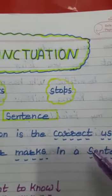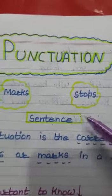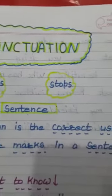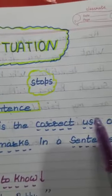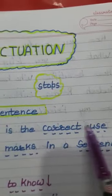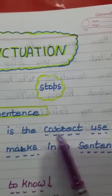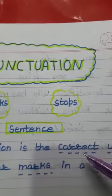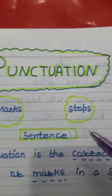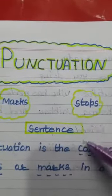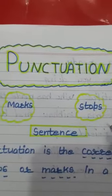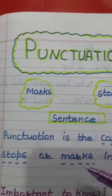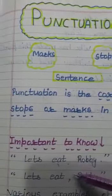We see that in a sentence, when we make use of marks and stops, the use should be correct. There should be correct use of the marks or stops in a sentence. And why should the use be correct? In order to give the sentence a complete sense. Let us clarify this with the help of the given sentences.